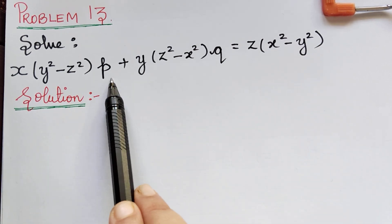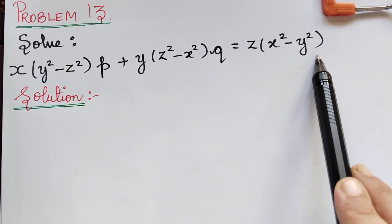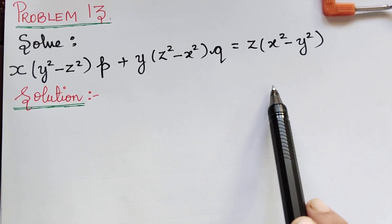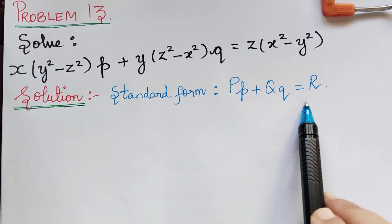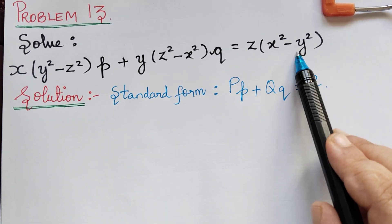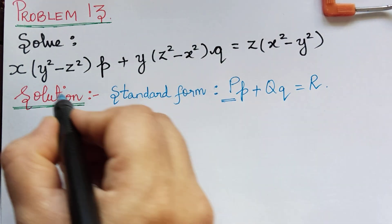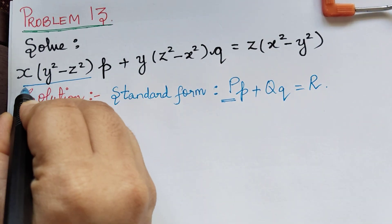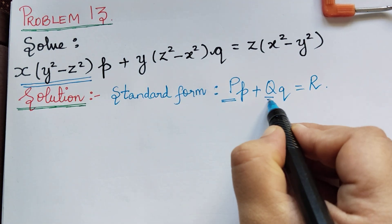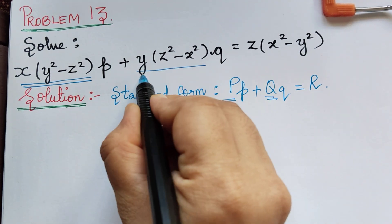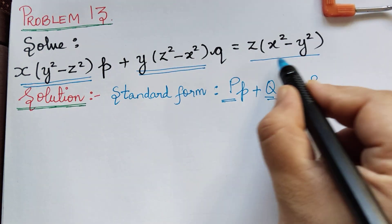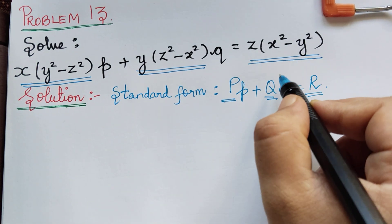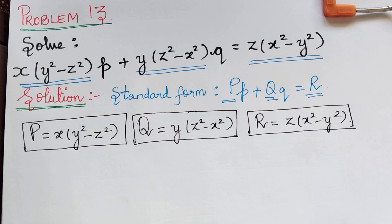First of all, we understand that this is in the form of Lagrange's equation. So we write the standard form and comparing with the given equation, we see that P = x(y² - z²), Q = y(z² - x²), and R = z(x² - y²). We have now written the values of P, Q, and R.